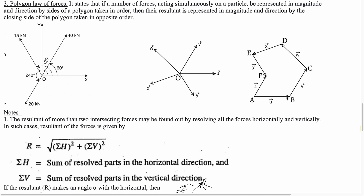In the graphical method, you take vector U and align it with the horizontal X-axis. From the end of vector U, vector V starts. Then from the end of vector V, vector W starts — each vector is placed head to tail in sequence.